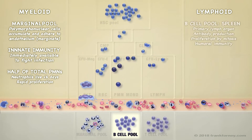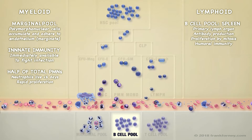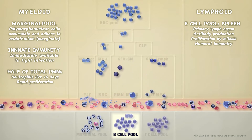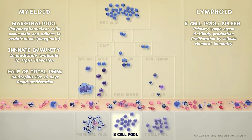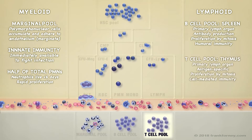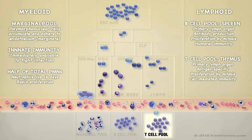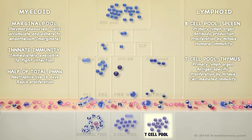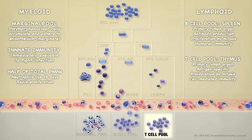B cells leave the bone marrow and migrate to the spleen, where they differentiate into subtypes. B lymphocytes proliferate and mount a humoral immune response. T cells migrate to the thymus and also differentiate into several subtypes. T cells will also proliferate and mount a cell-mediated immune response.